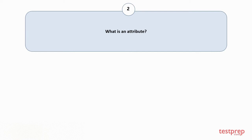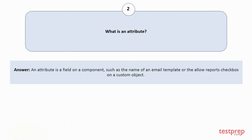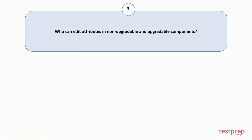Question number two: what is an attribute? An attribute is a field on a component, such as the name of an email template or the Allow Reports checkbox on a custom object.